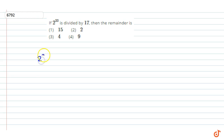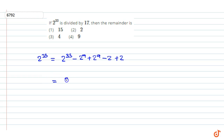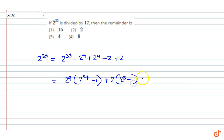2 to the power 33 can be written as equal to 2 to the power 33 minus 2 to the power 9, plus 2 to the power 9 minus 2, plus 2. This can be written as 2 to the power 9 into 2 to the power 24 minus 1, plus 2 into 2 to the power 8 minus 1, plus 2.